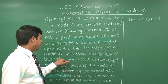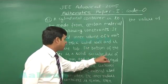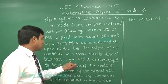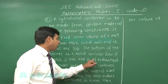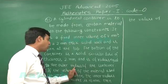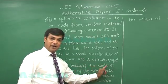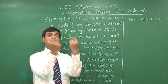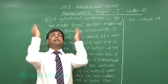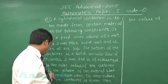The bottom of the container is a solid circular disk of thickness 2 mm and is of radius equal to the outer radius of the container. So we actually have a disk of 2 mm thickness and something mounted on it in cylindrical shape.